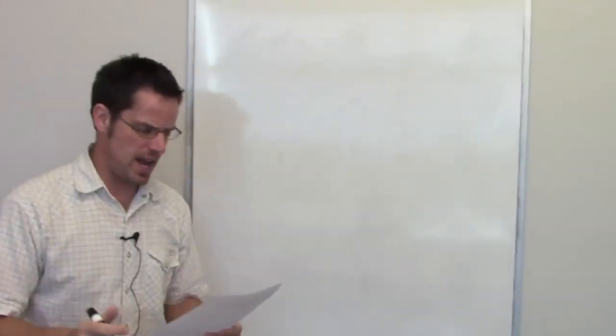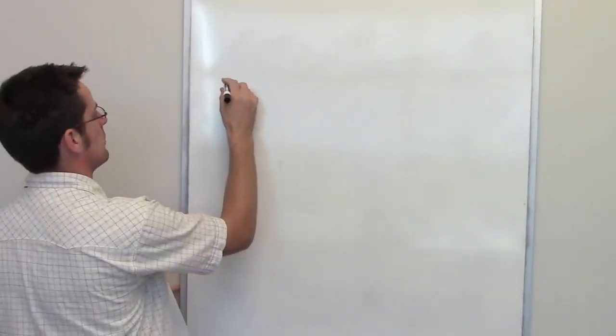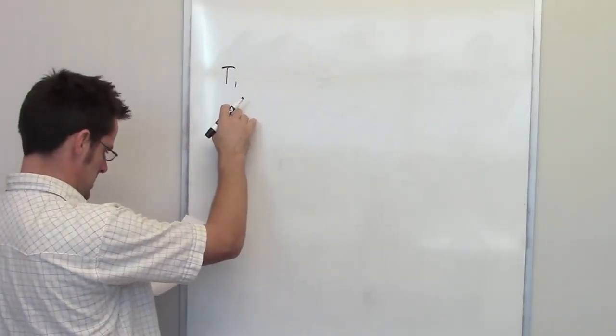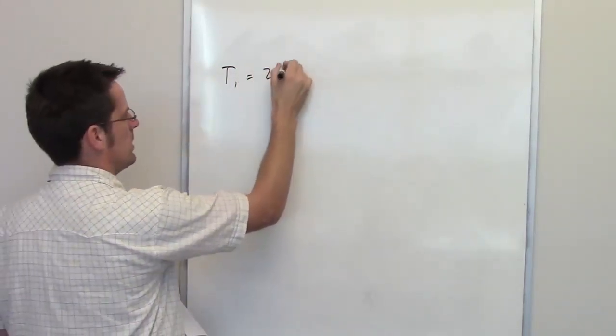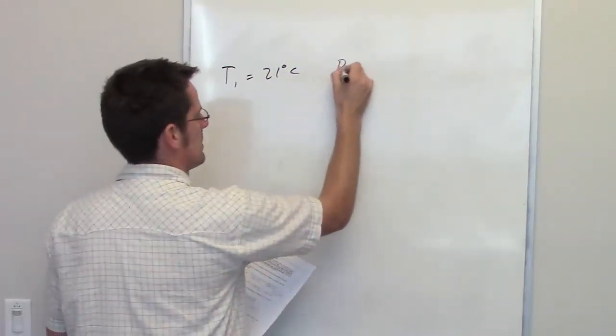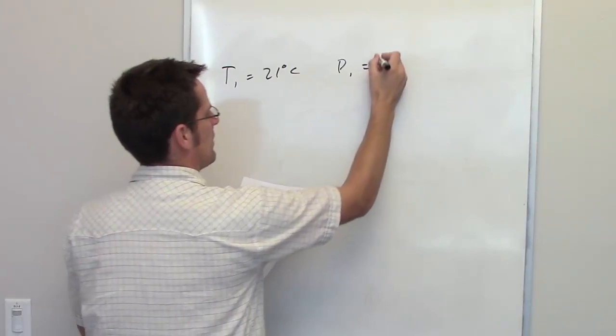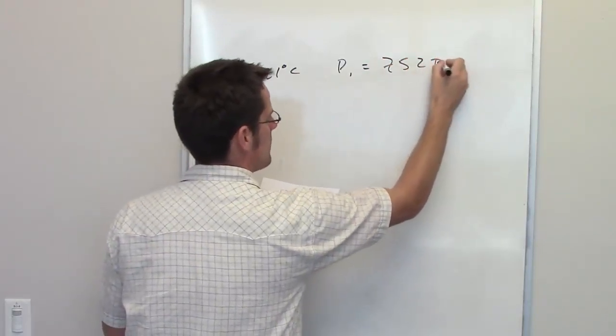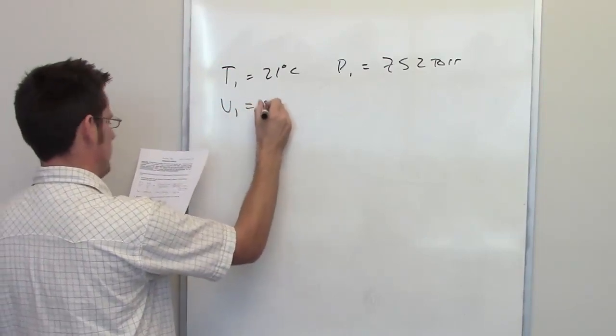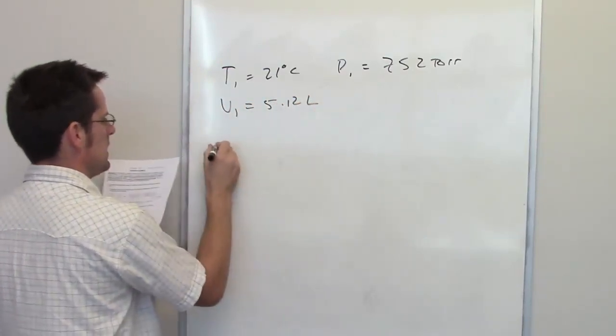In this problem, we're told that a fixed gas at a temperature of 21 degrees Celsius, so I'm going to write T1 equals 21 degrees Celsius, exhibits a pressure, so this is going to be its P1, of 752 torr, and occupies a volume, so this will be V1, of 5.12 liters.